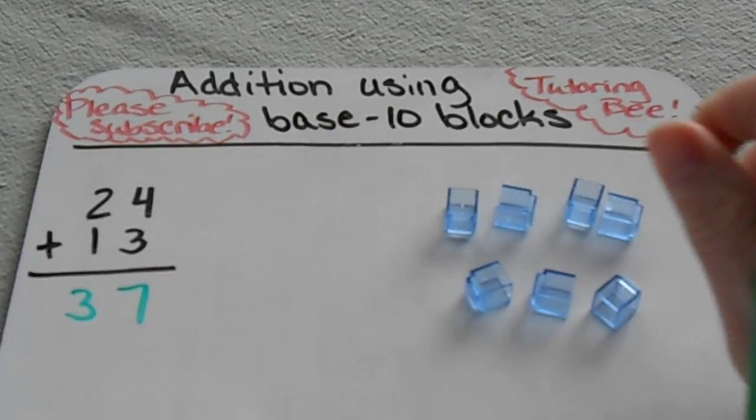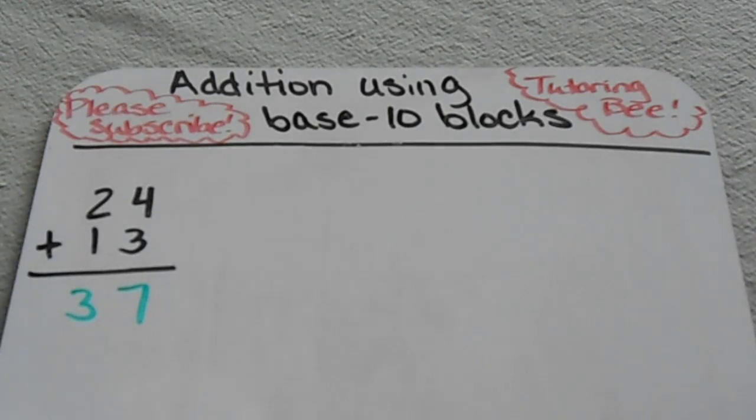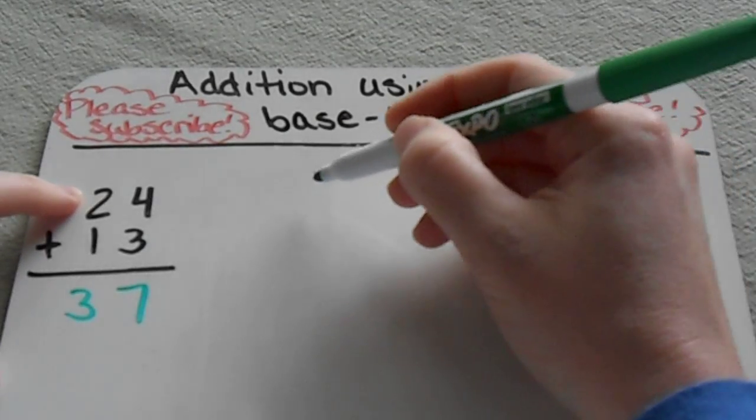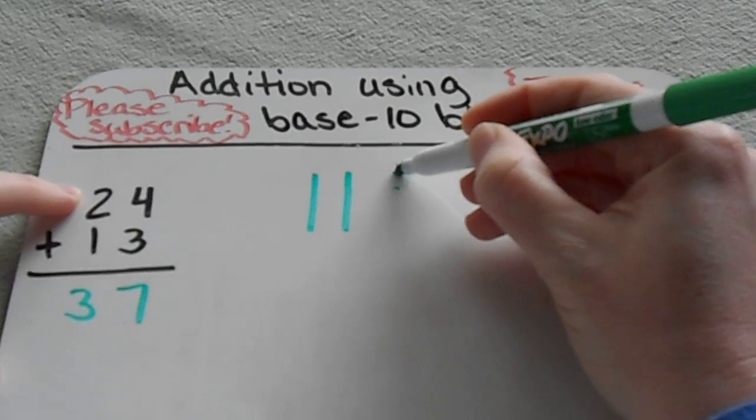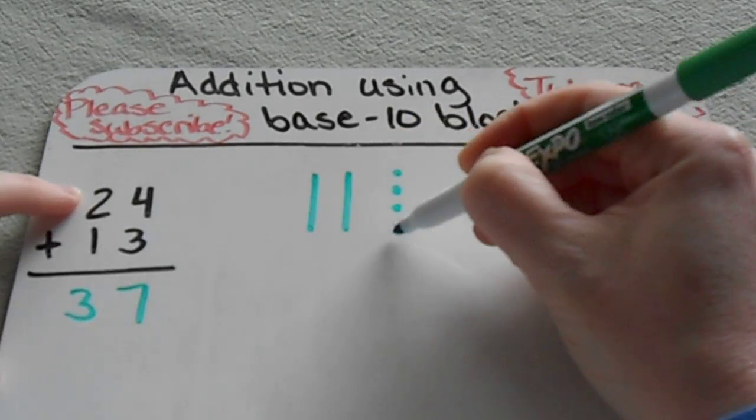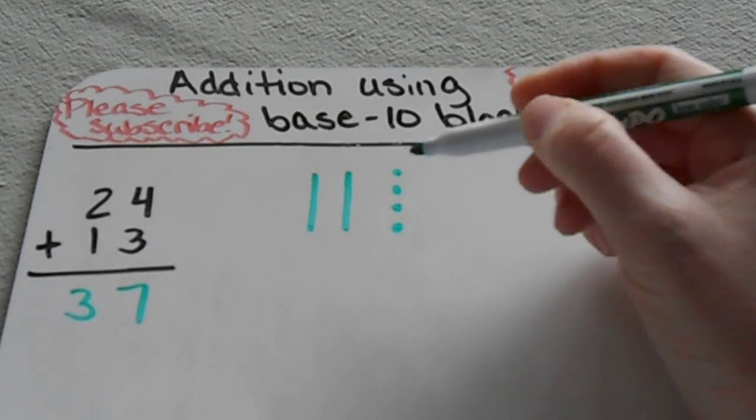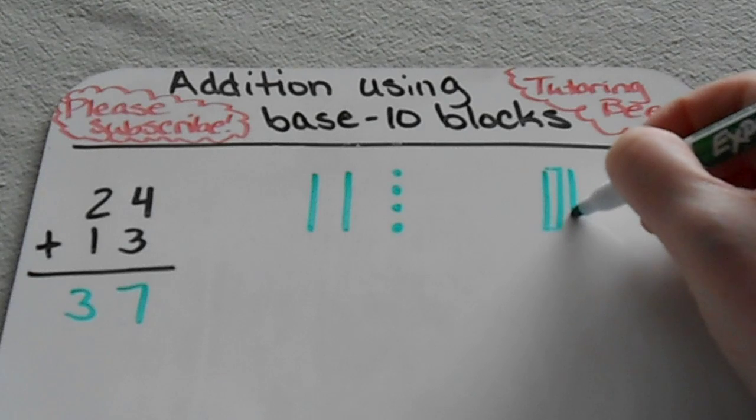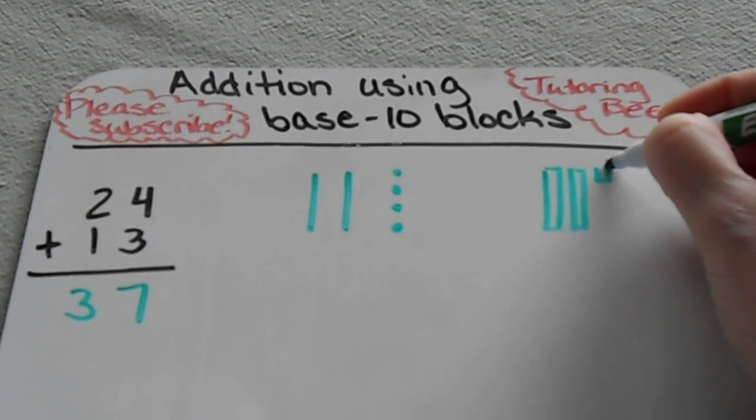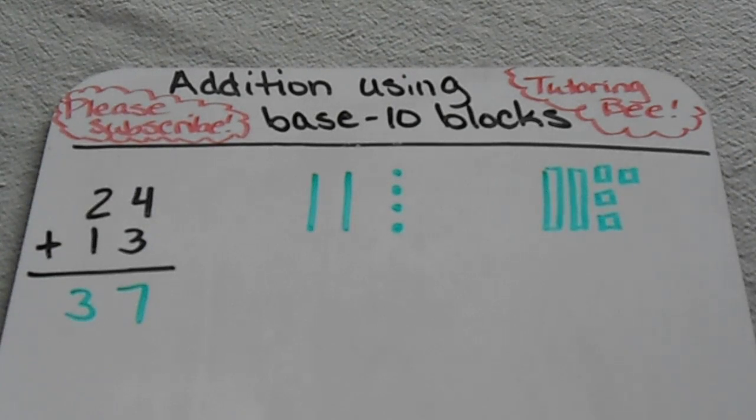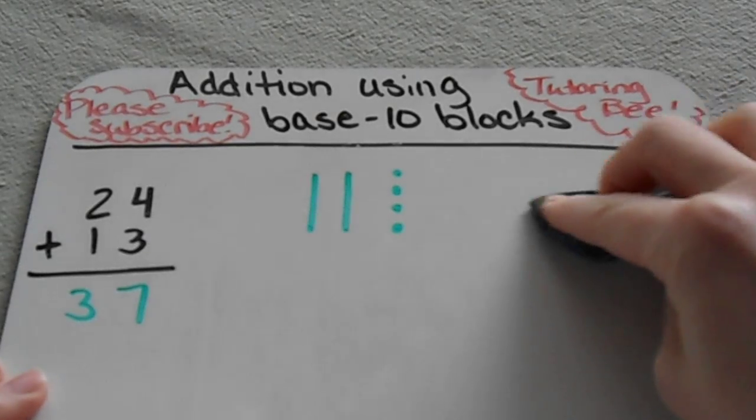I'm going to show you how you can actually draw out your own. It's really easy and you don't have to purchase these manipulatives if you don't have them. I'm just going to start with my top number and draw out two tens and four ones just like that, using lines and dots. Some students like to actually draw out the rectangles and the cubes, and that's fine. It just takes up a little bit more space and time, but if that's what they're comfortable with, that's fine too.